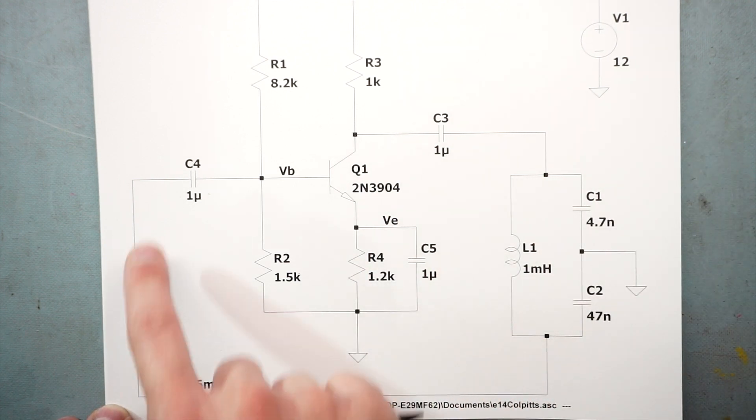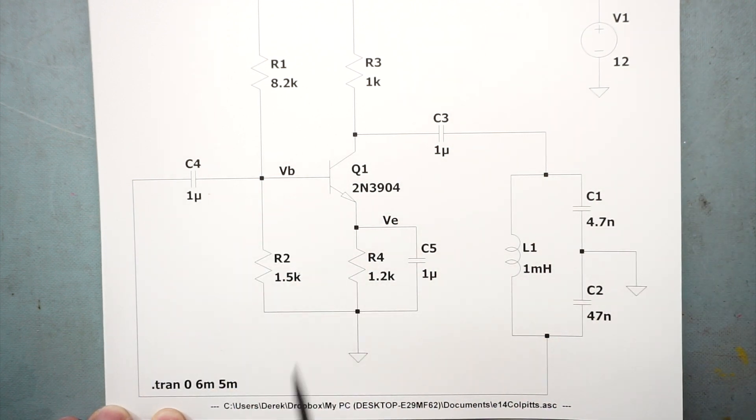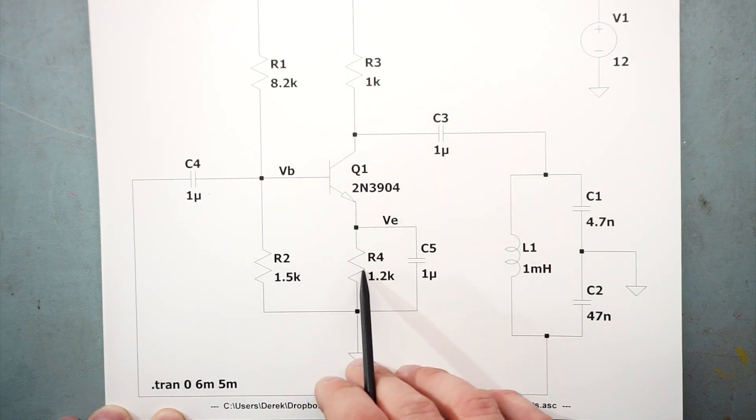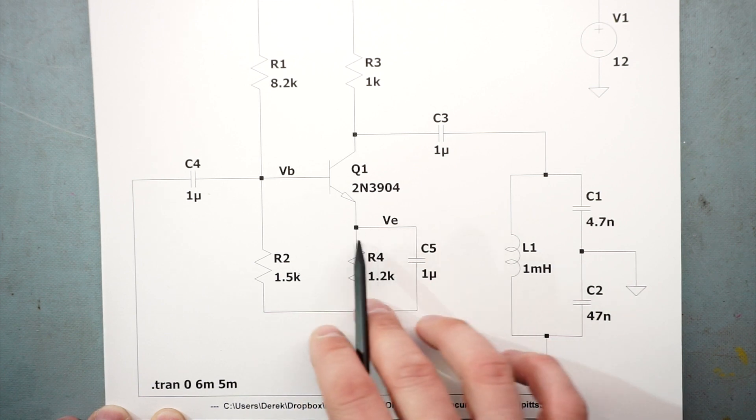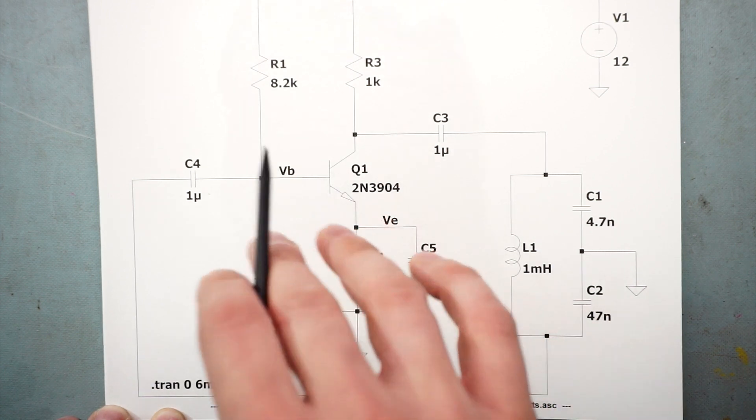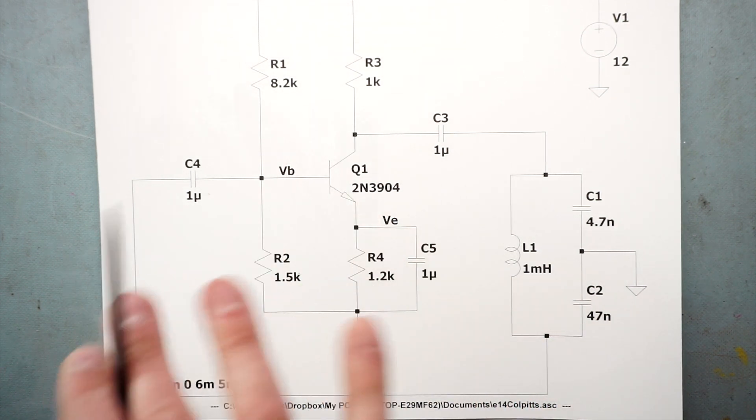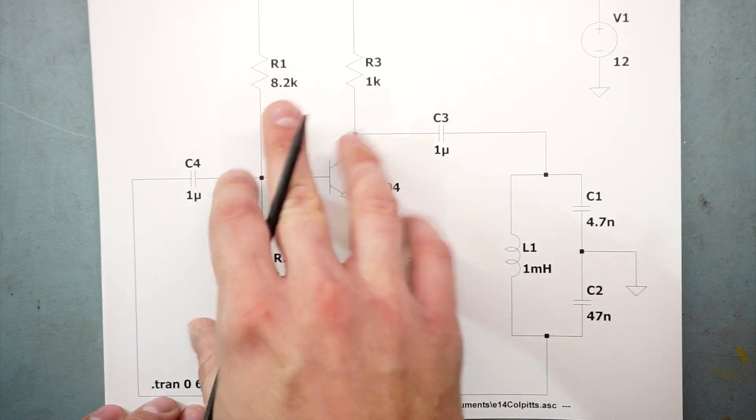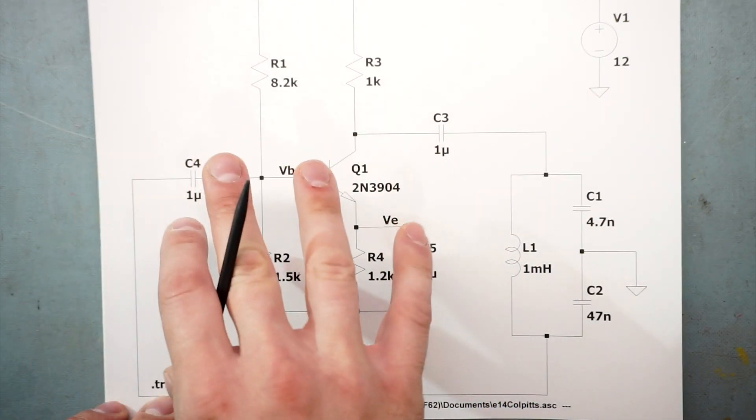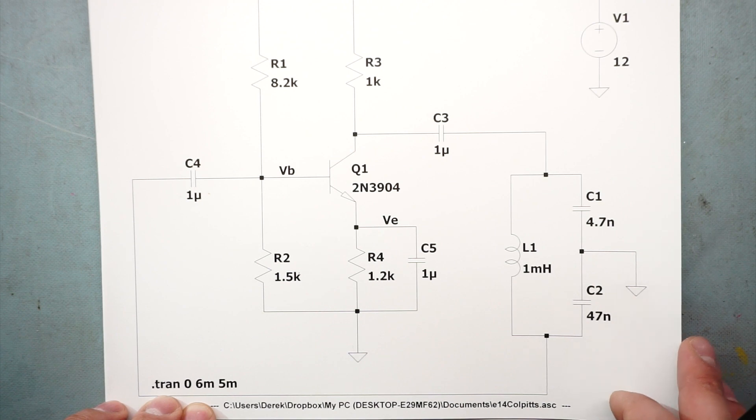We feedback that signal back into the base. The ratio of the collector resistor and the emitter resistor are actually what set our gain. But we're going to do a fancy thing and bypass this guy so that we use the internal resistance in the transistor to set the gain. Let's look at each portion of this circuit individually, and then we'll look at the final circuit and see how it performs.